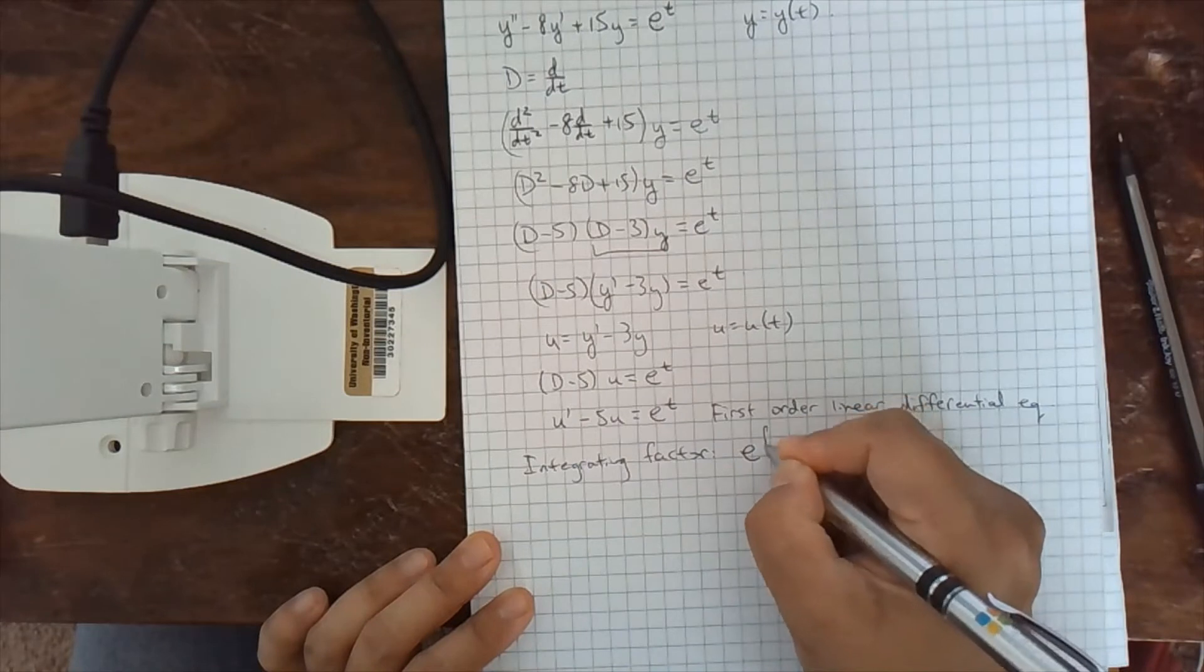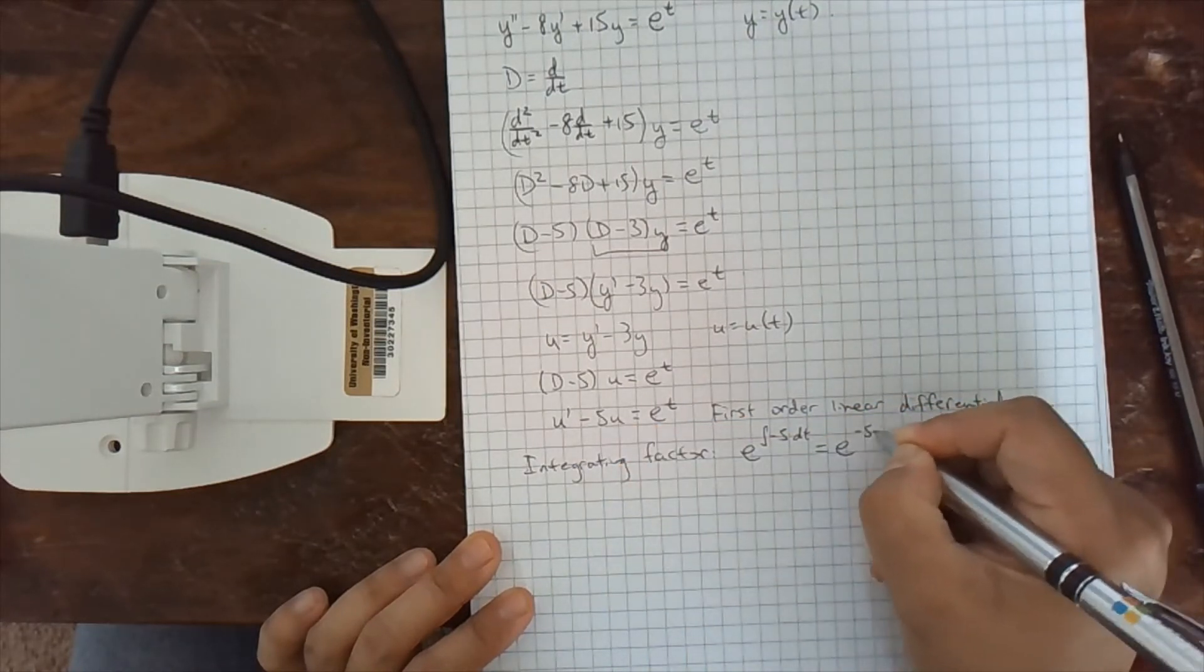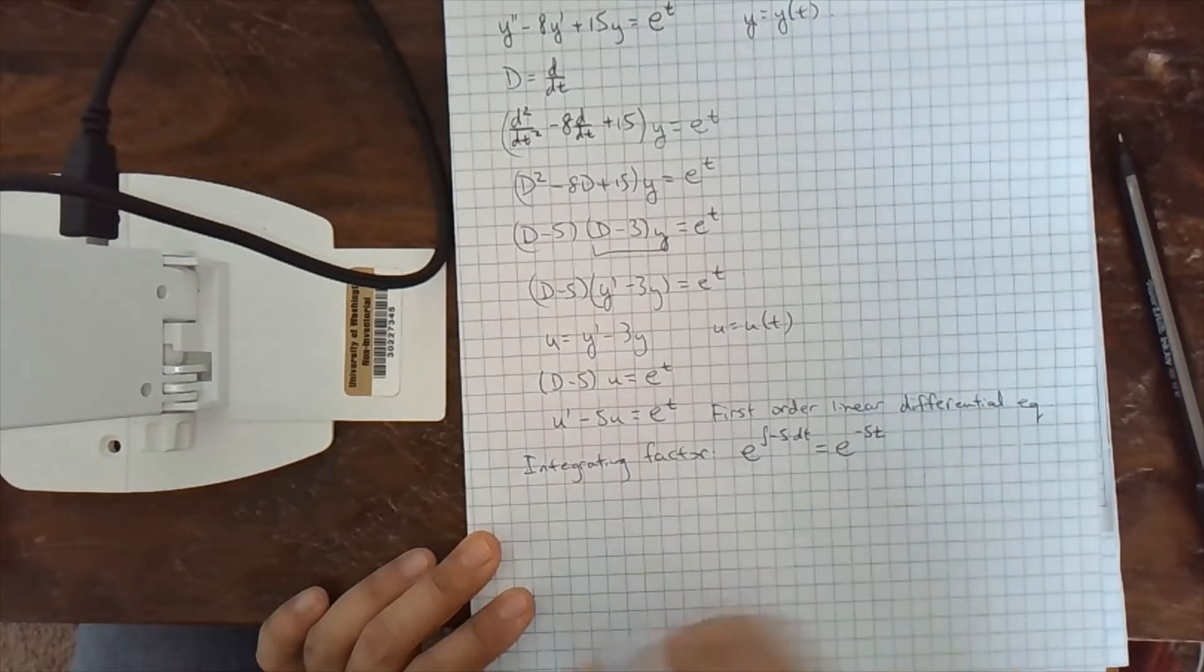So this time it's e to the integral of negative 5 dt. You can take any antiderivative. Do not need plus a constant there. Negative 5t.